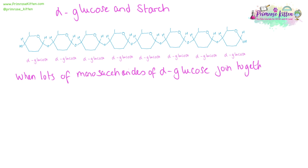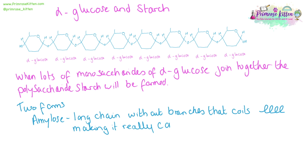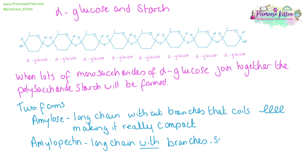When lots of monomers of alpha-glucose join together, the polysaccharide starch is formed. There are two forms of starch. Amylose, which is long chains without branches — this forms coils, making it really compact. The other form is amylopectin. The key difference is that while they are long-chain still, they have branches, so it cannot coil.